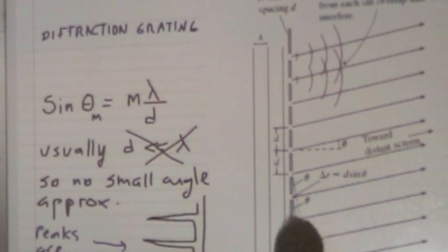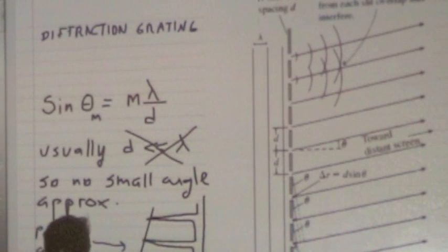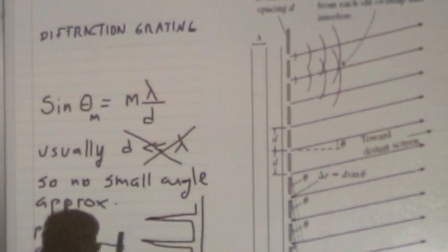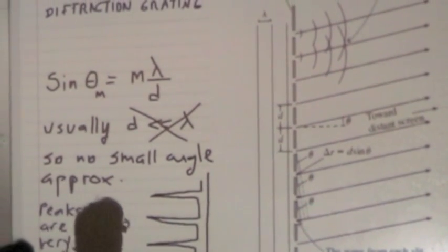So what a diffraction grating is, now we're taking the idea of interference between two slits. If you don't have one, just share it with somebody next to you. We're going to take a look at this lamp in a minute, after I explain the theory of it.